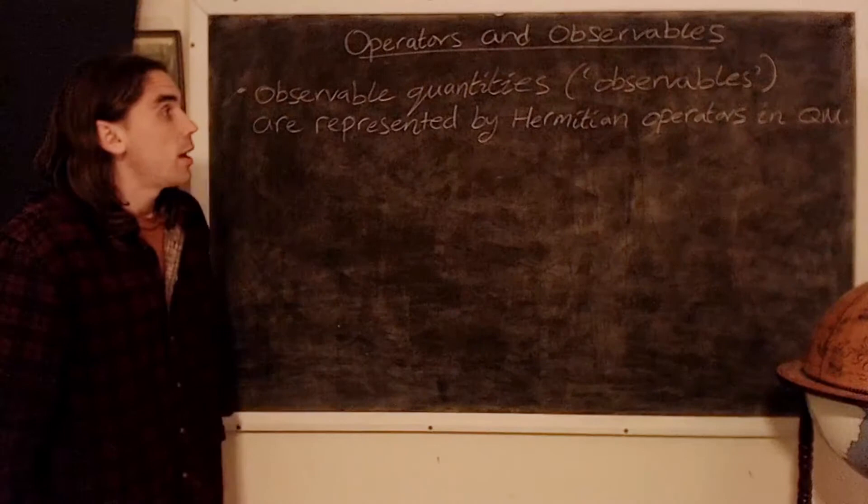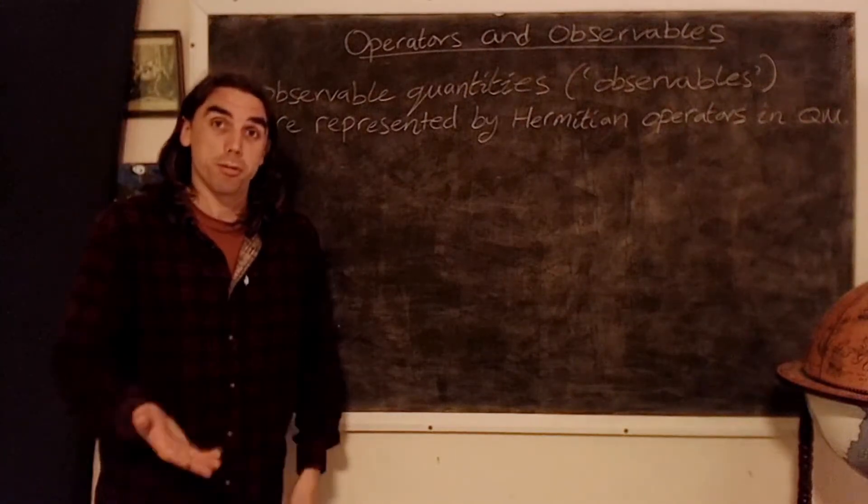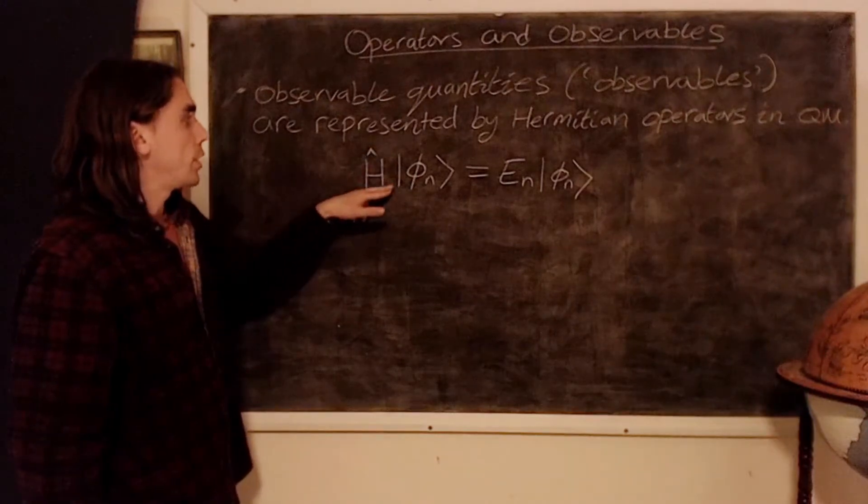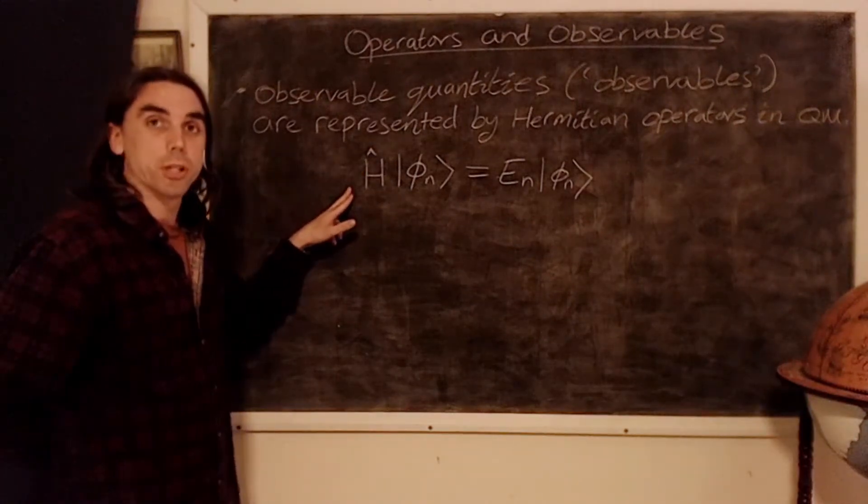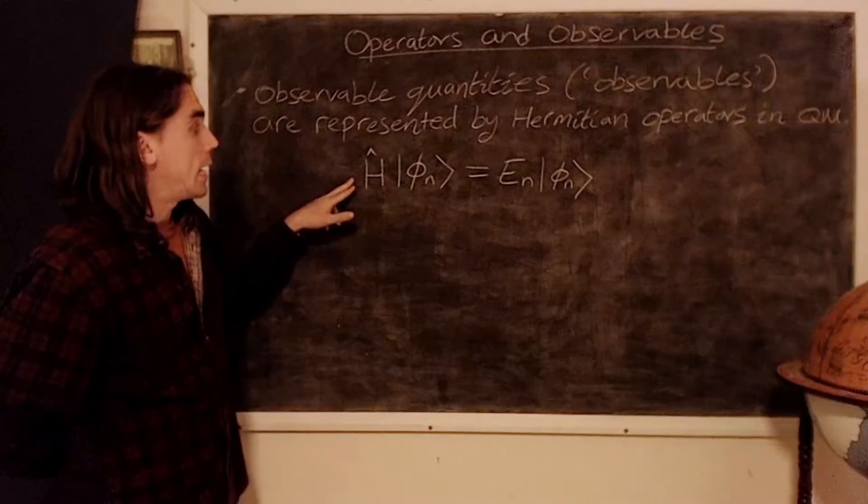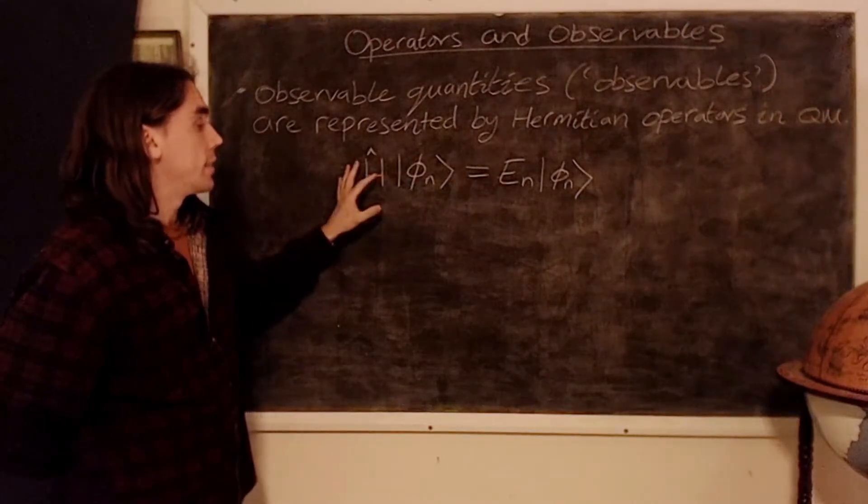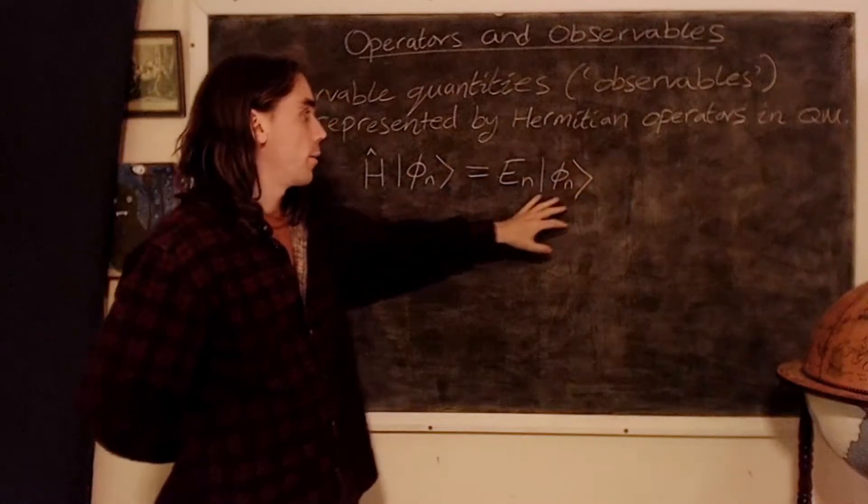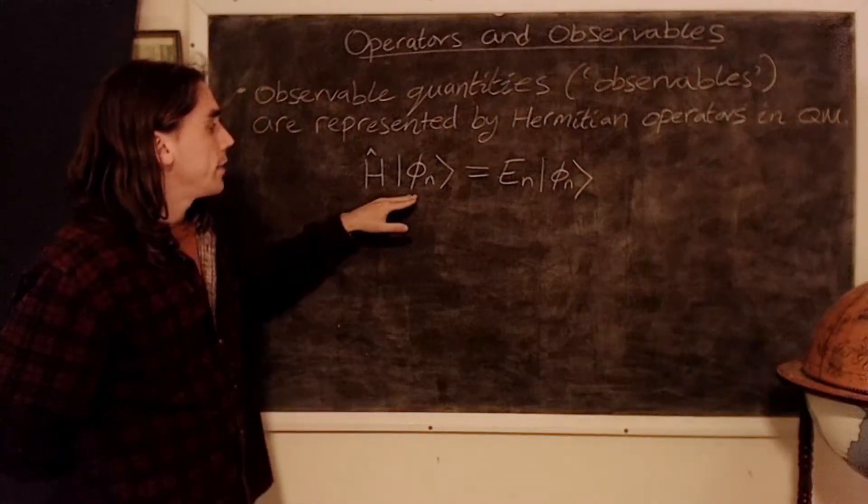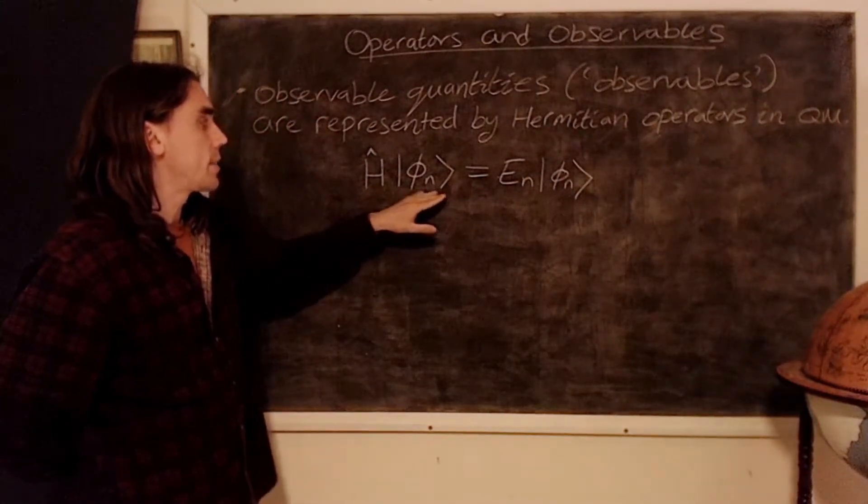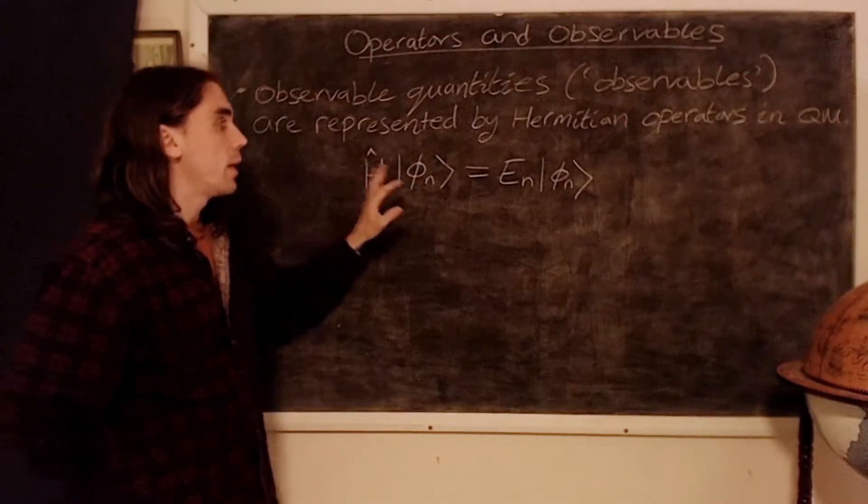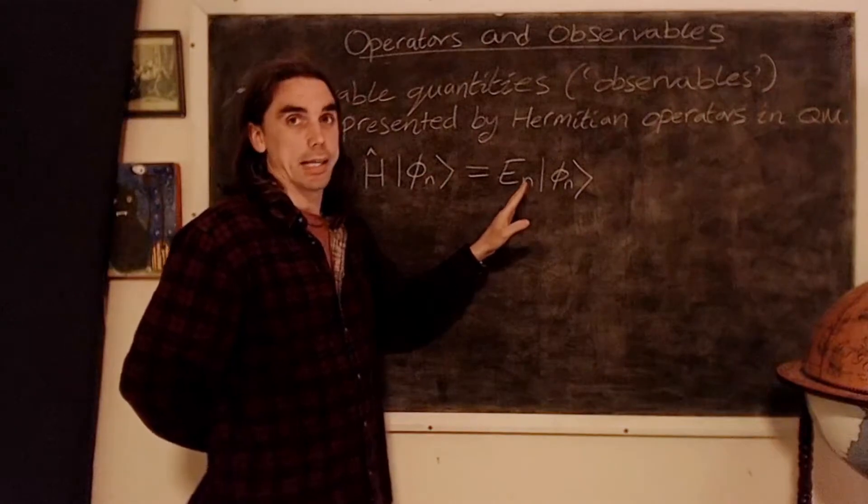So let's look at an example first, and it should be very familiar to us at this point. It's just the Hamiltonian, which you may recall is referred to as the energy operator, and it forms the time-independent Schrodinger equation here, where these states, or ket phi subscript n, are the eigenstates of the Hamiltonian, and E_n the corresponding eigenenergies.